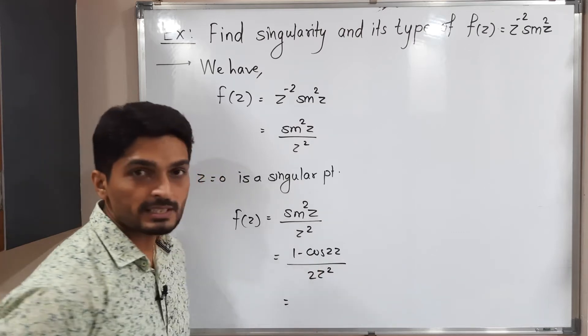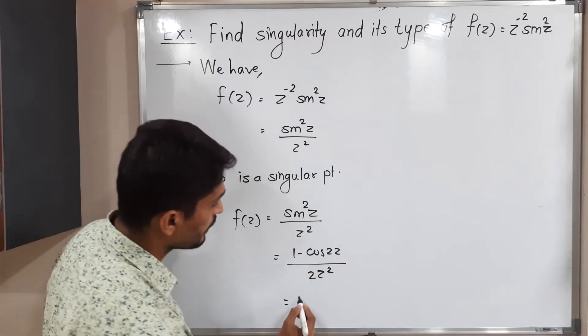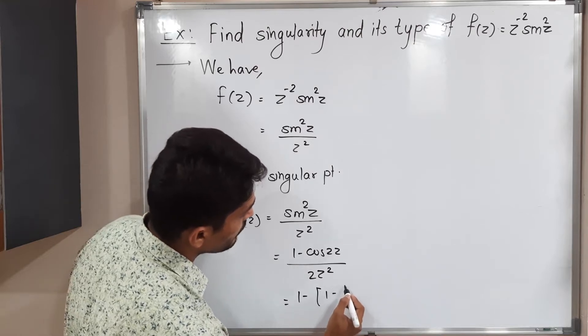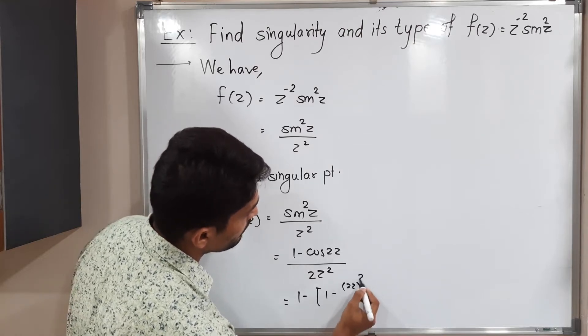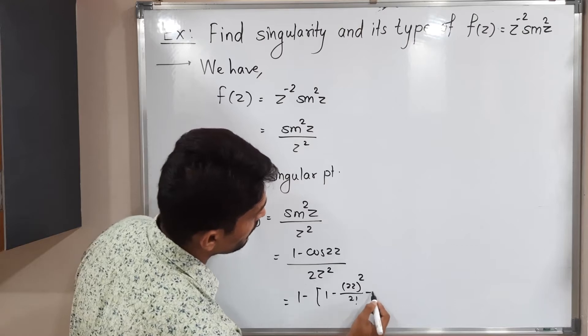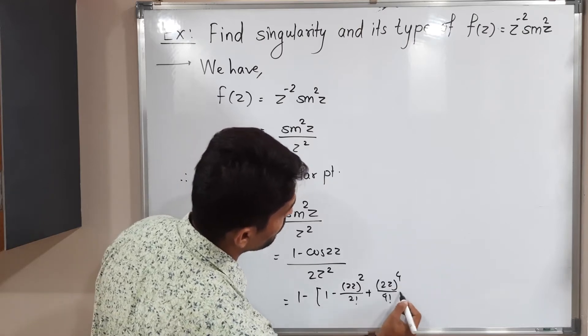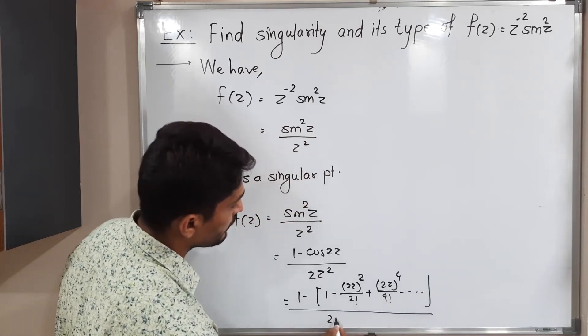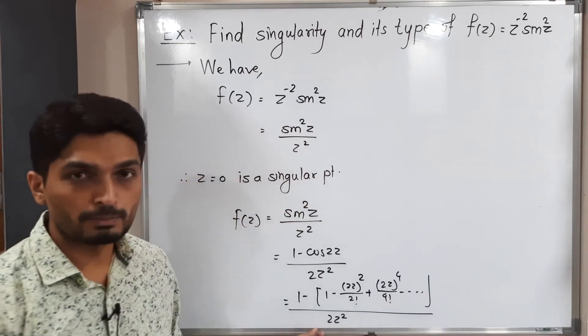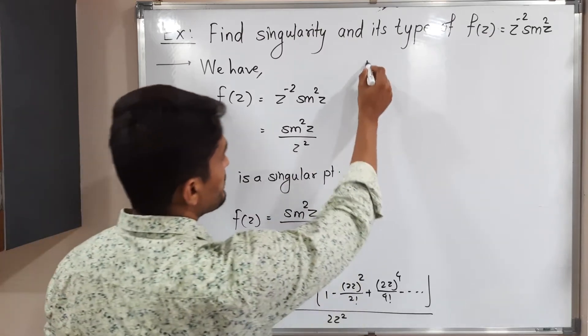We are familiar with the series of cos. Let us use it here. [1 - (1 - 2z²/2! + (2z)⁴/4! + ...)] divided by 2z². I hope it is visible to you. Let us continue on this side then.